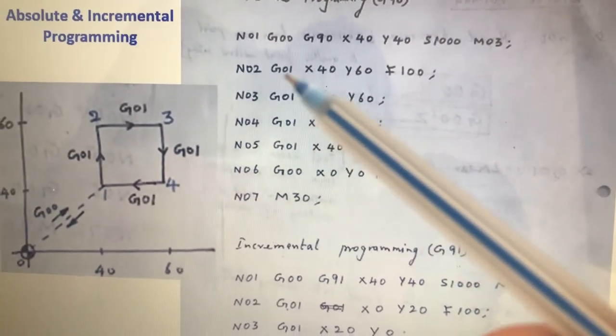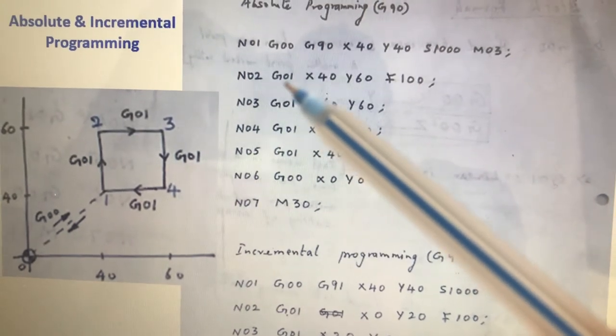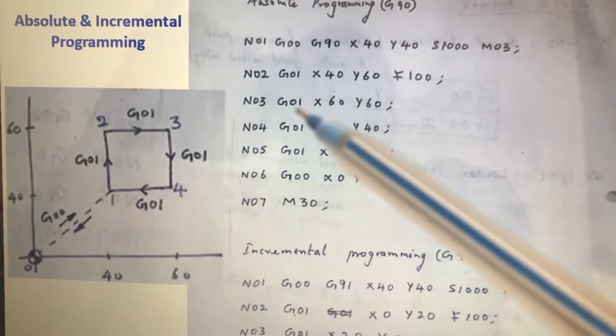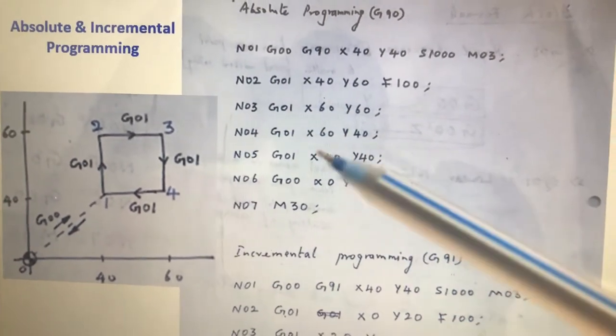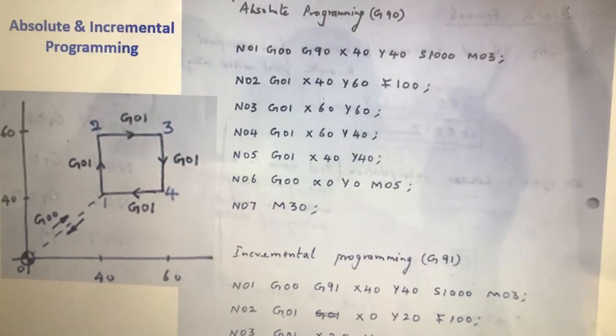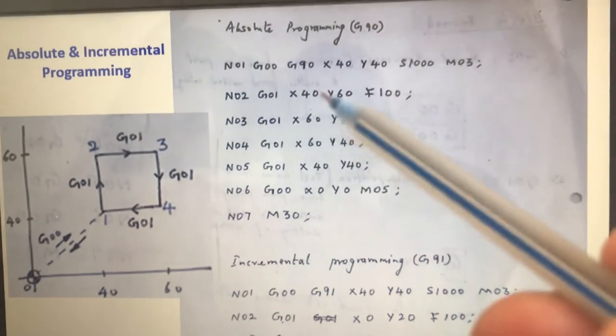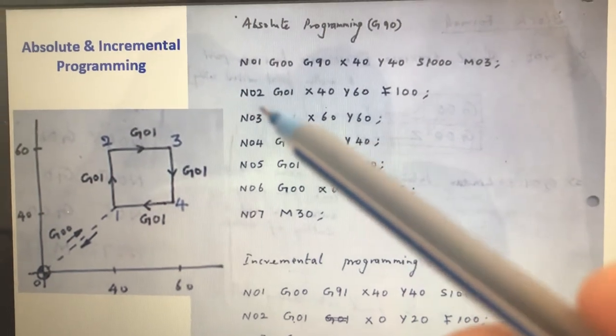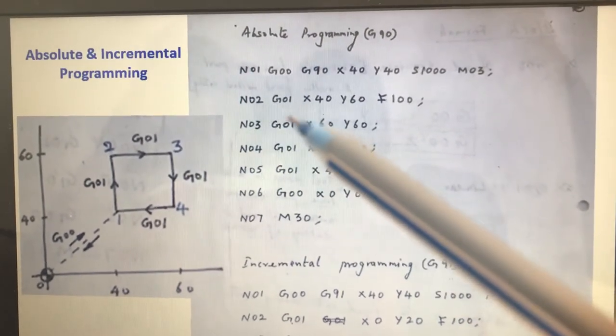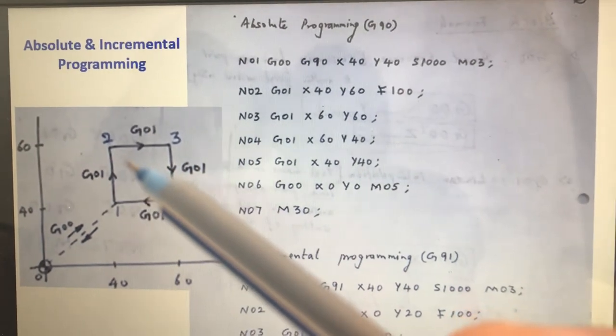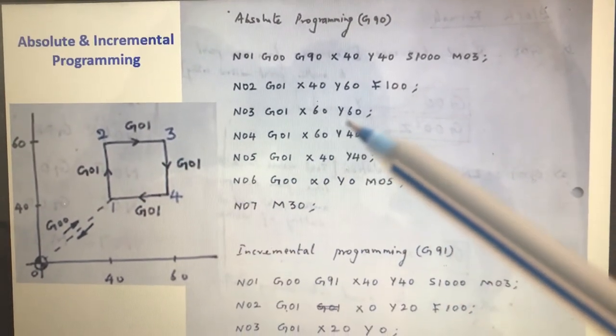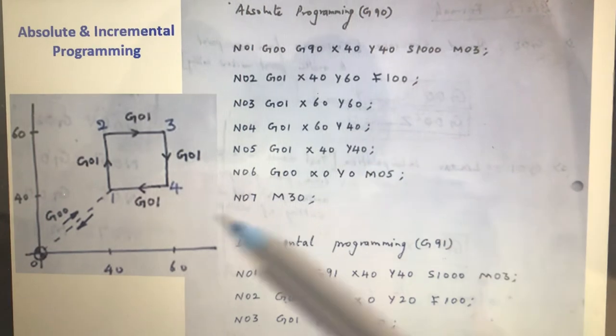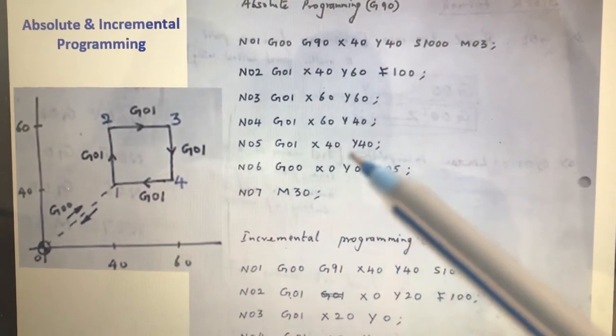In fact, G01 is also not necessary to be repeated because G01 is already in the memory of machine. Machine assumes same G01 unless there is a change. When there is a change in the code only, we will tell this is change. Otherwise, machine will take the same previous commands and follows the operation. So this is N02, the second block. And third point X60, Y60. And fourth point X is 60, Y is 40. And then coming back to one is again X40, Y40.